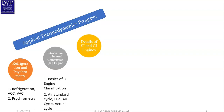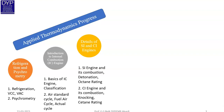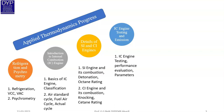In Unit 3, Details of SI and CI Engines, we will first look at the SI engine and its combustion, detonation, and octane rating — covering what is meant by detonation and octane rating. We will then study the CI engine and its combustion, knocking, and cetane rating.